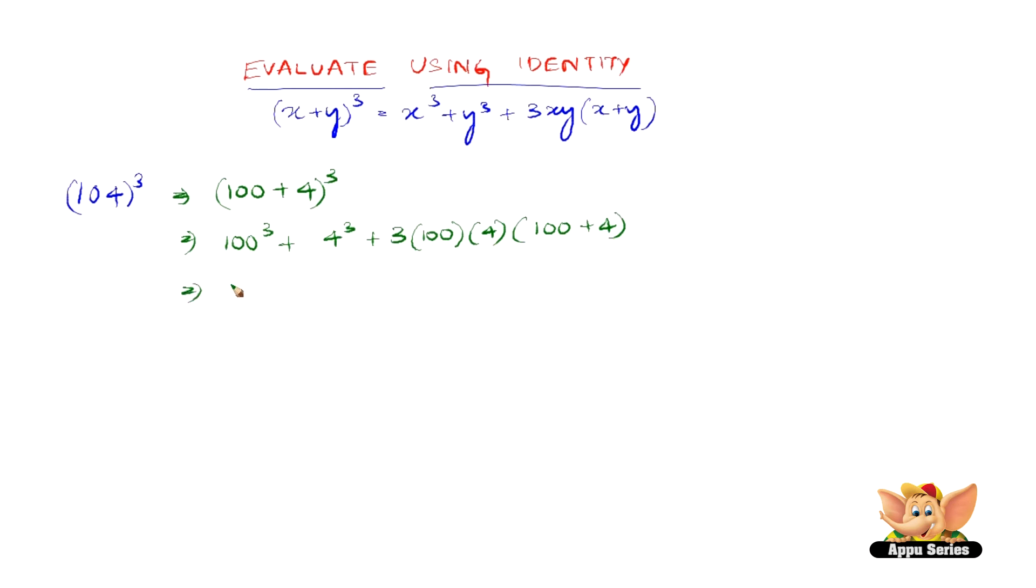So we have 100³ as 1 followed by 6 zeros, plus 4³ as 64 (that is 4×4 is 16, 16×4 is 64), plus 3×100 is 300, 300×4 is 1200 into 100+4 is 104. So now we have 1,000,000 plus 64 plus 1200×104, which is 124,800.